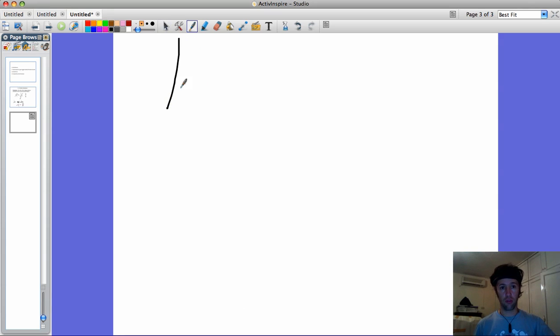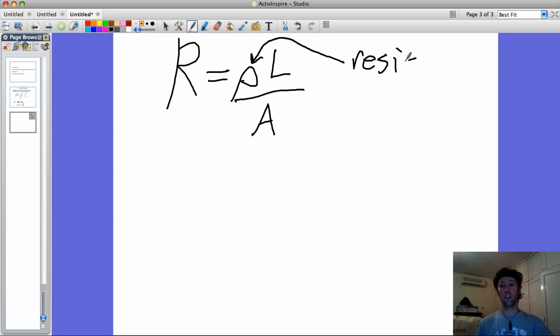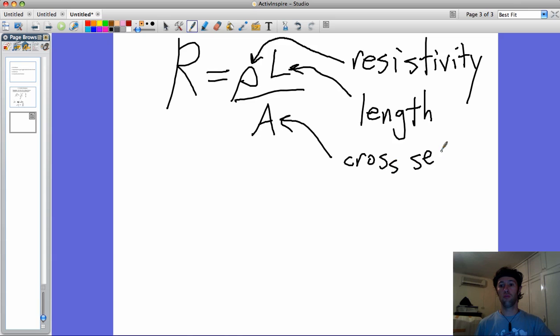And now you have to use this equation about resistance of conductors. And this little rho guy here, it's a Greek symbol rho, that is resistivity. Each conductor has its own level of resistivity. Capital L, that's the length of your wire or conductor, and A is your cross-sectional area.